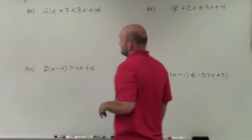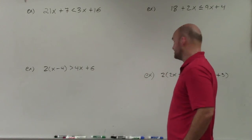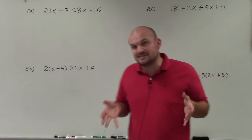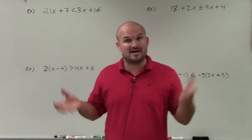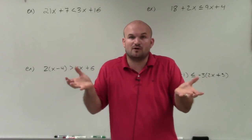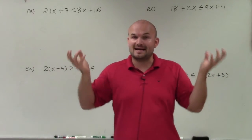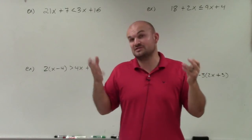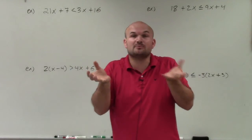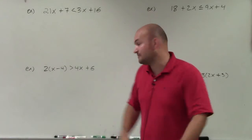For instance, in the first example, I have 21x plus 7 is less than 3x plus 16. The main important thing I always like to do is get the variable on the same side. We have a variable on the left side of the inequality and the right side of the inequality. Before we even start solving, we want to get the variables on the same side, first simplify both sides, and then solve using inverse operations.